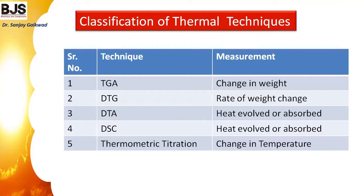The second technique is DTG — differential thermogravimetric technique — where we measure the rate of weight change. Then there is differential thermal analysis, DTA, where we measure the heat evolved or absorbed. DSC, differential scanning calorimetry, studies endothermic or exothermic reactions. Thermometric titration monitors change in temperature.